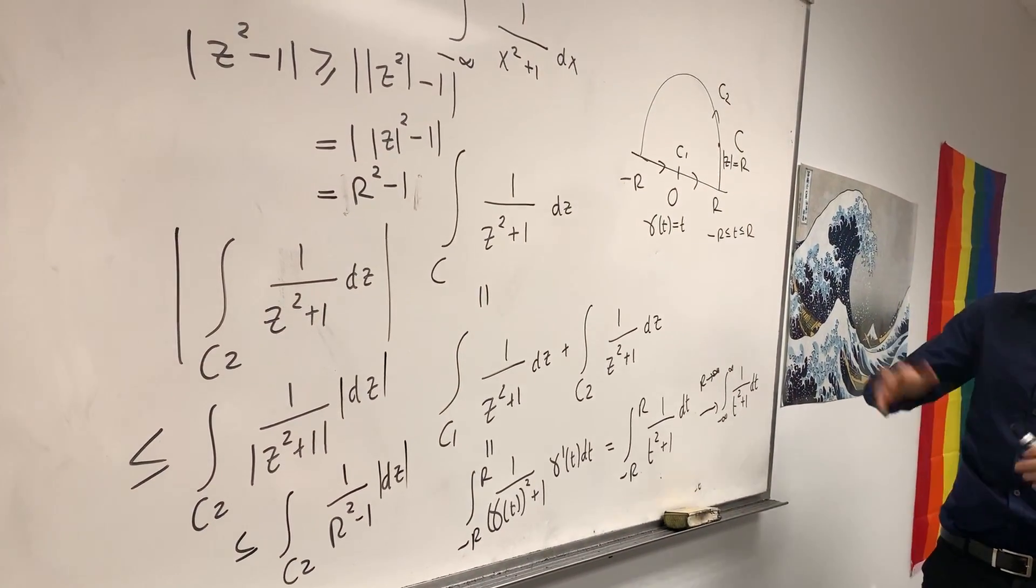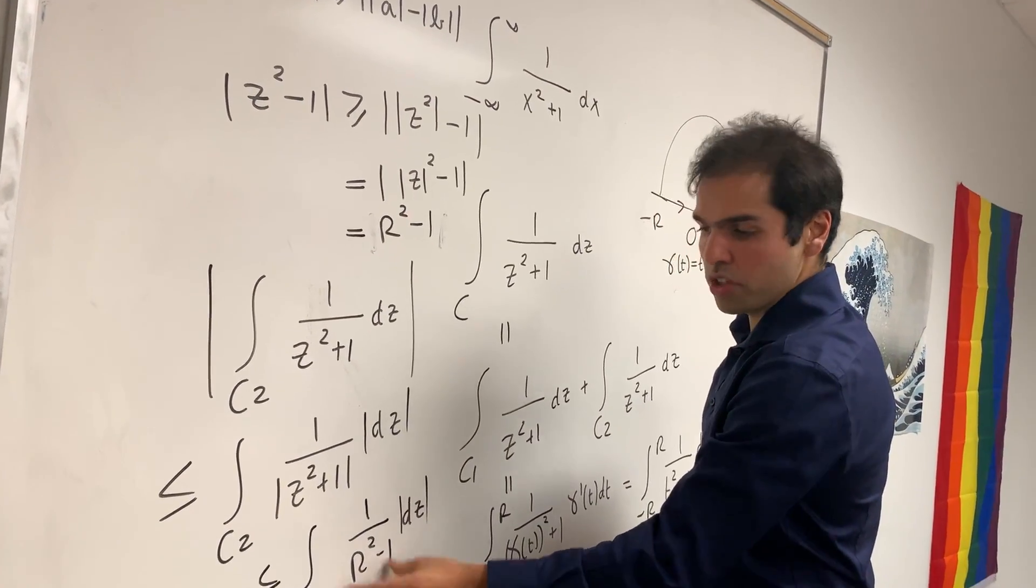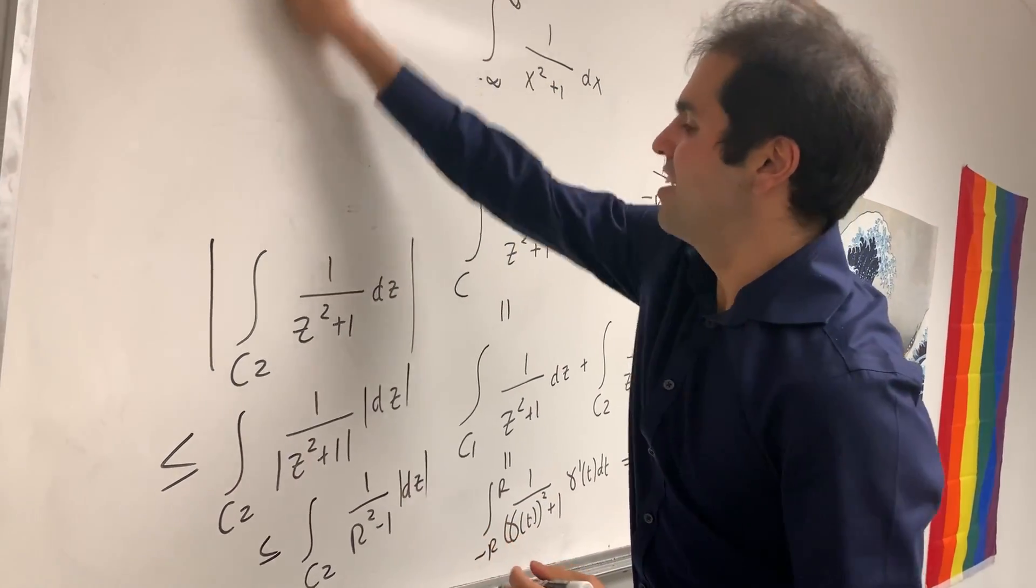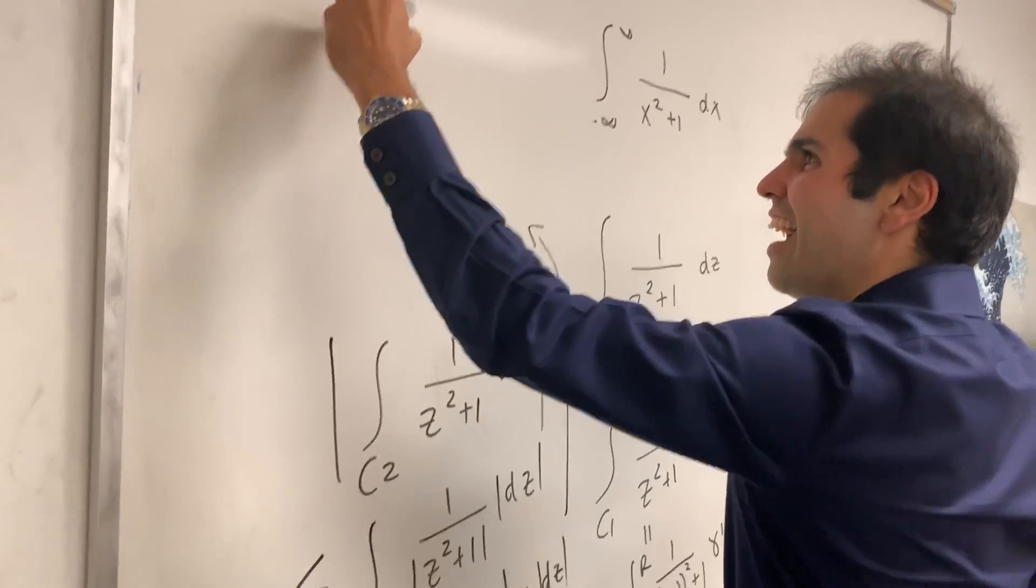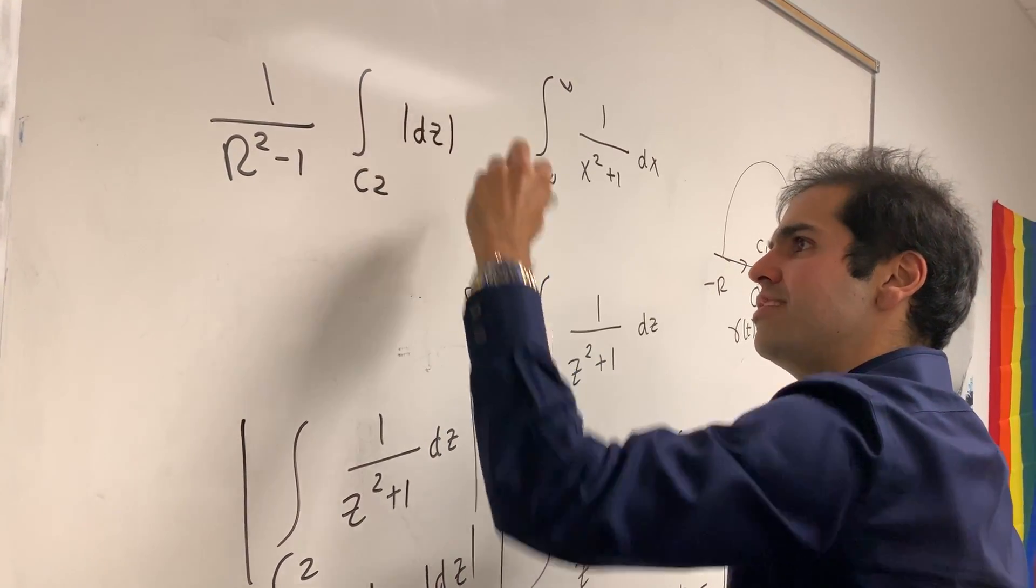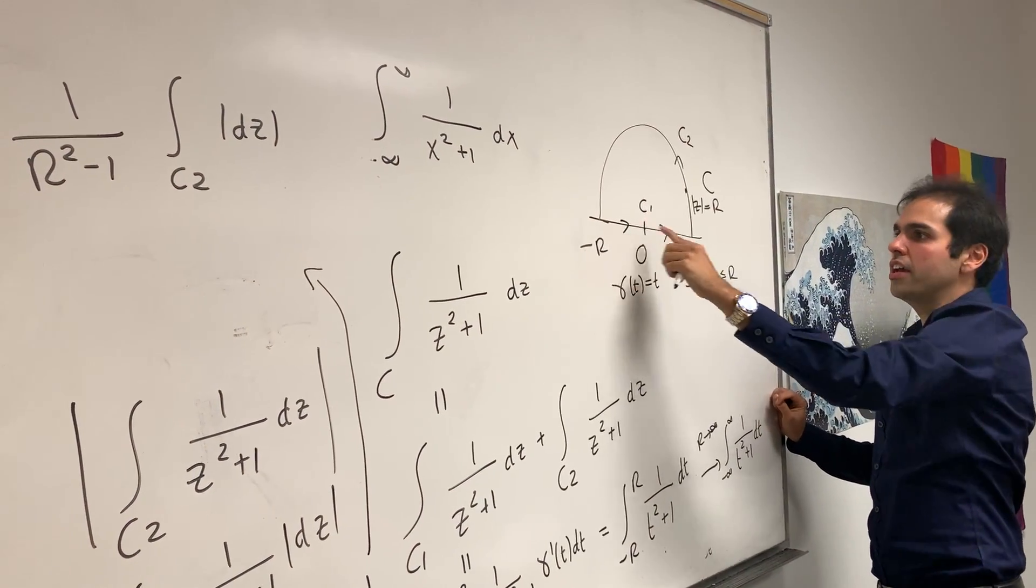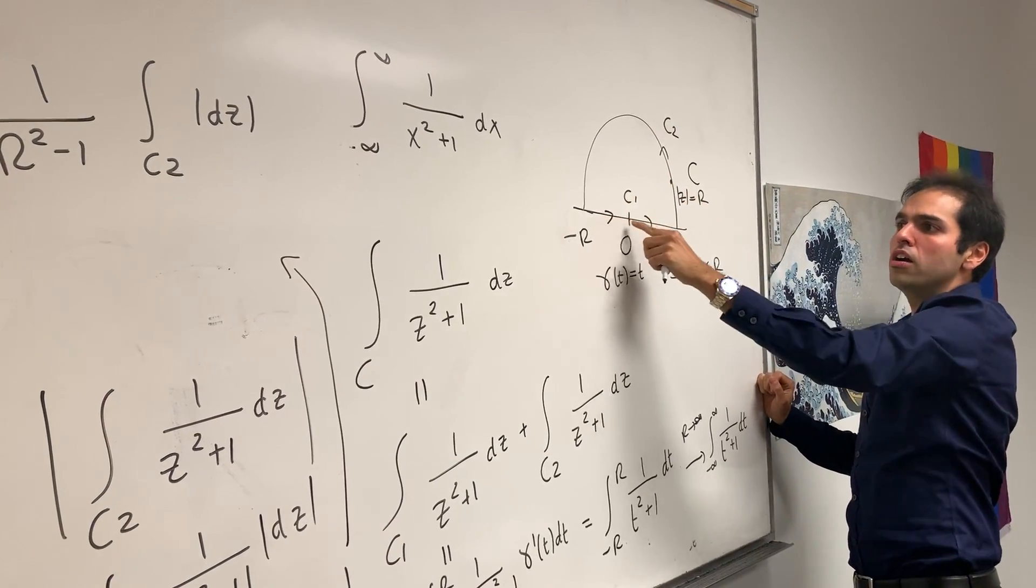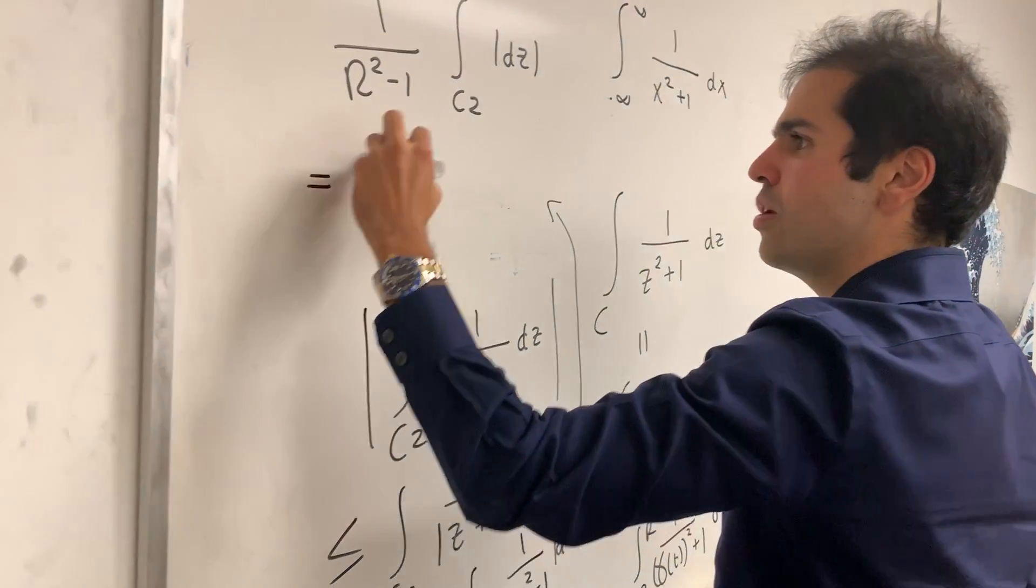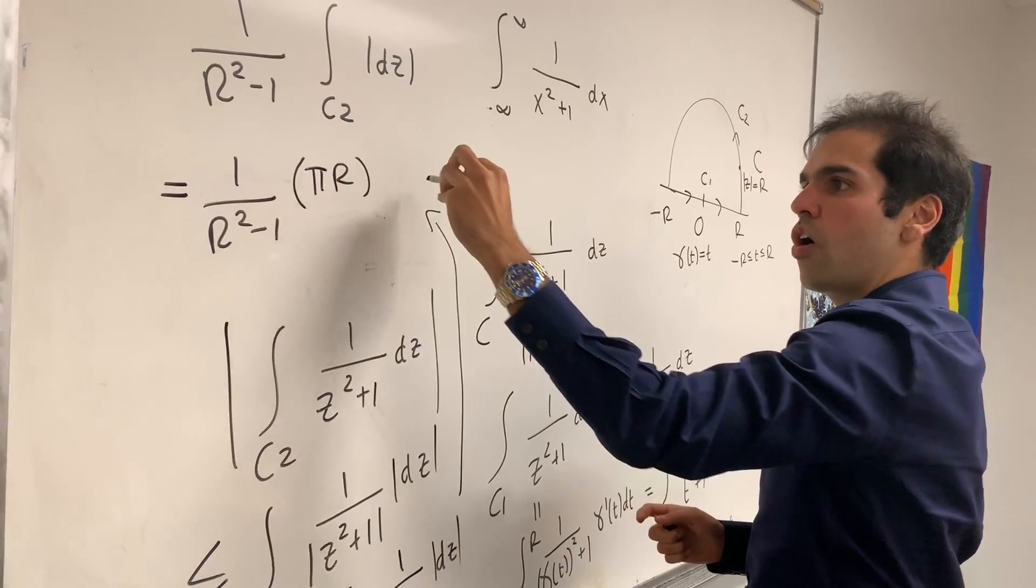So in other words, what you're left with is, if you take reciprocals now, this integral is less or equal to integral over c2 of 1 over r squared minus 1 dz. I guess technically absolute value of dz. Someone corrected me in this other video. Now, this one is just a constant. So it drops out. 1 over r squared minus 1 integral over c2 of absolute value of dz. But all this means is just the length of your curve. And the length of our curve is 2 pi r divided by 2, which is just pi r. So this equals to 1 over r squared minus 1, and then pi r.